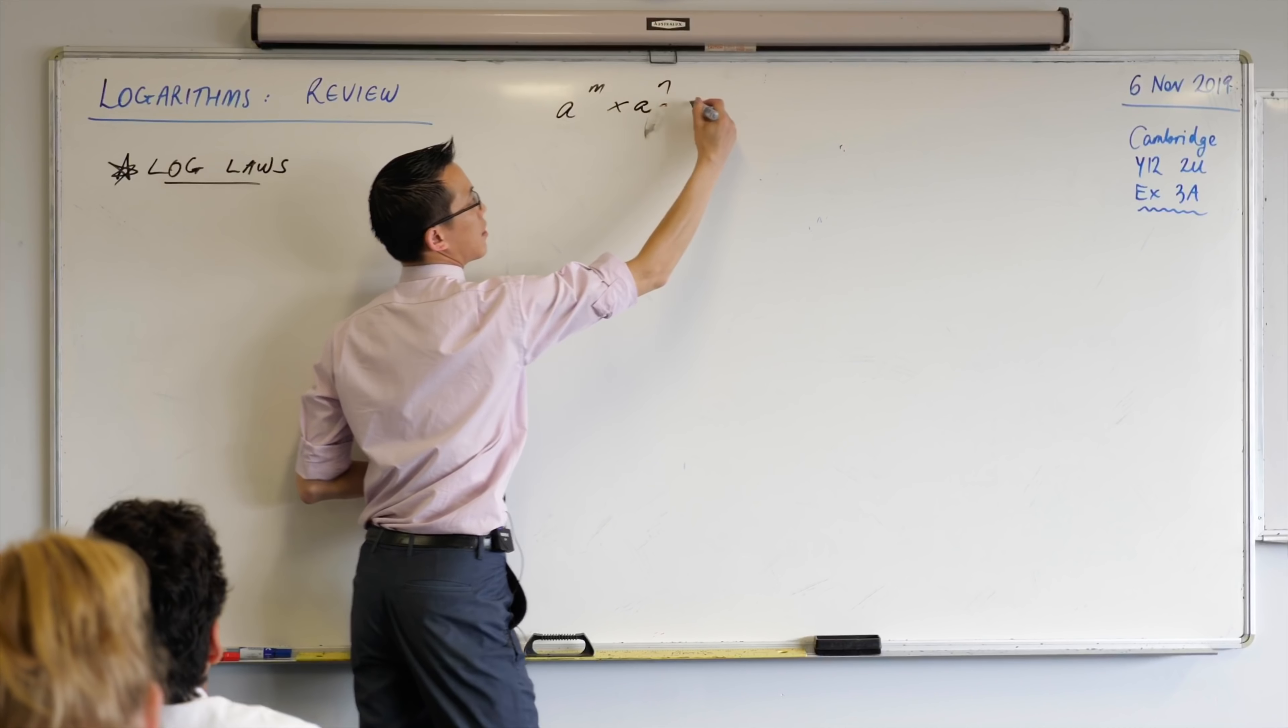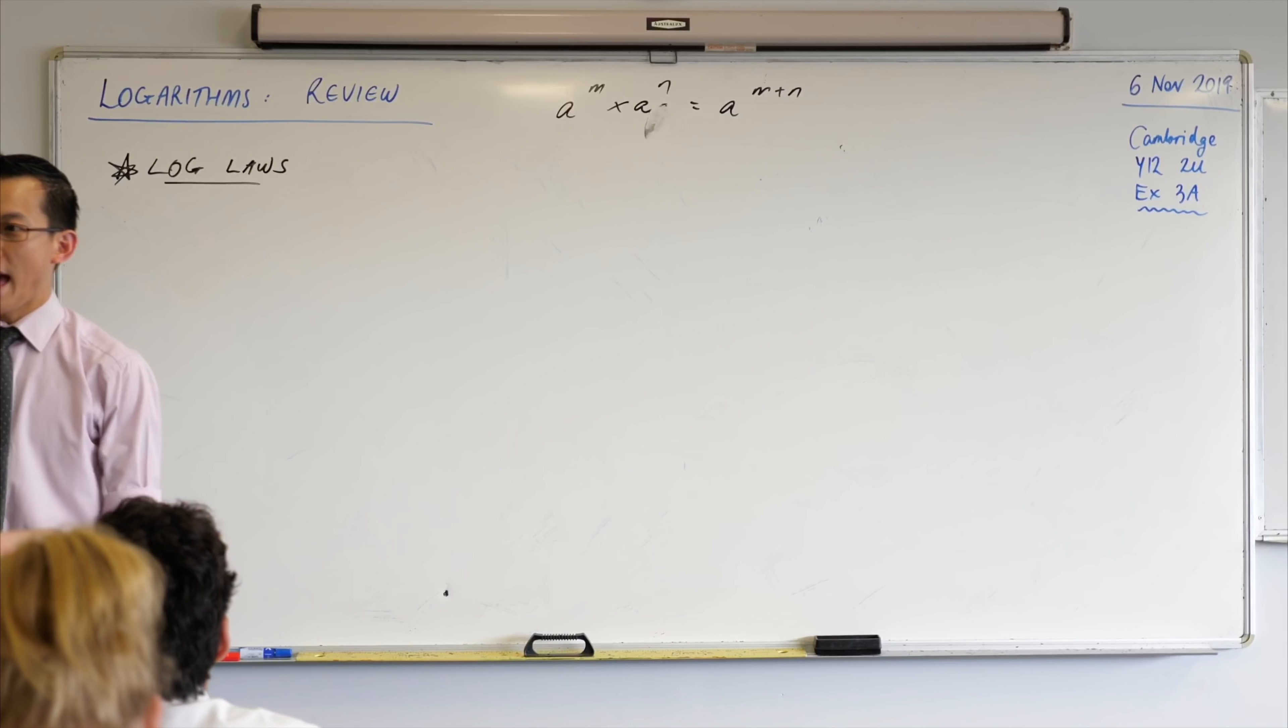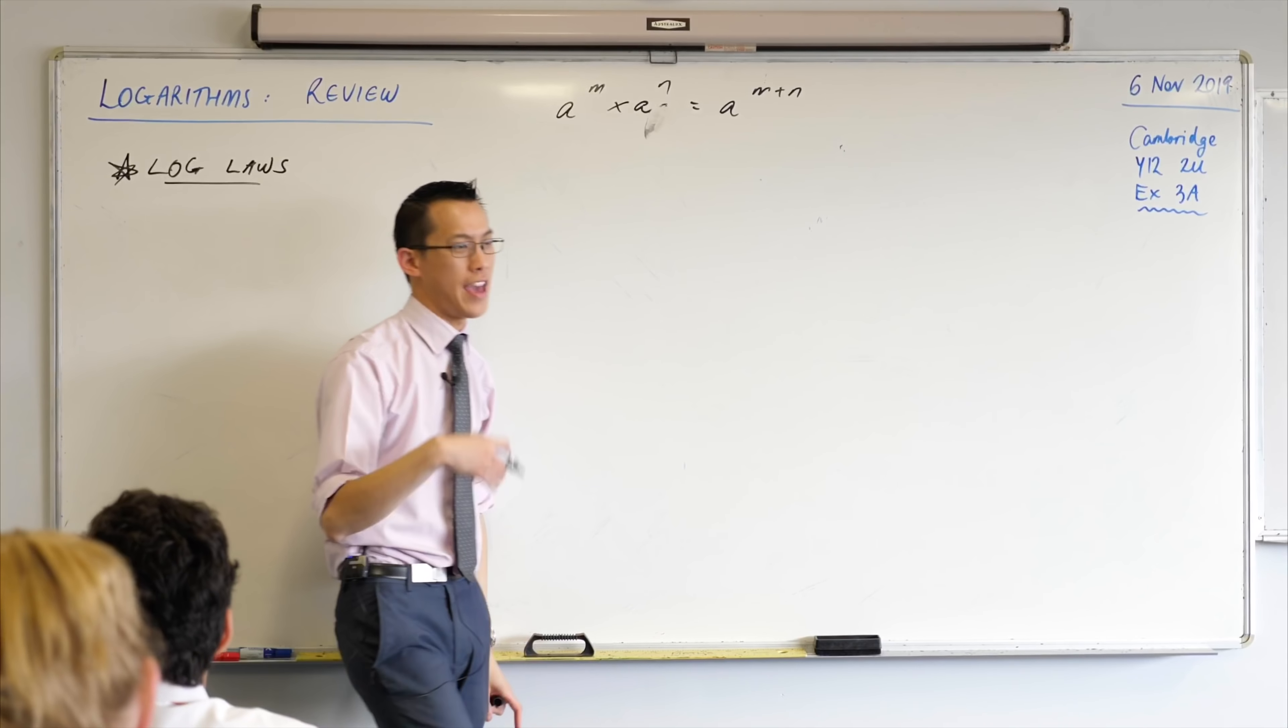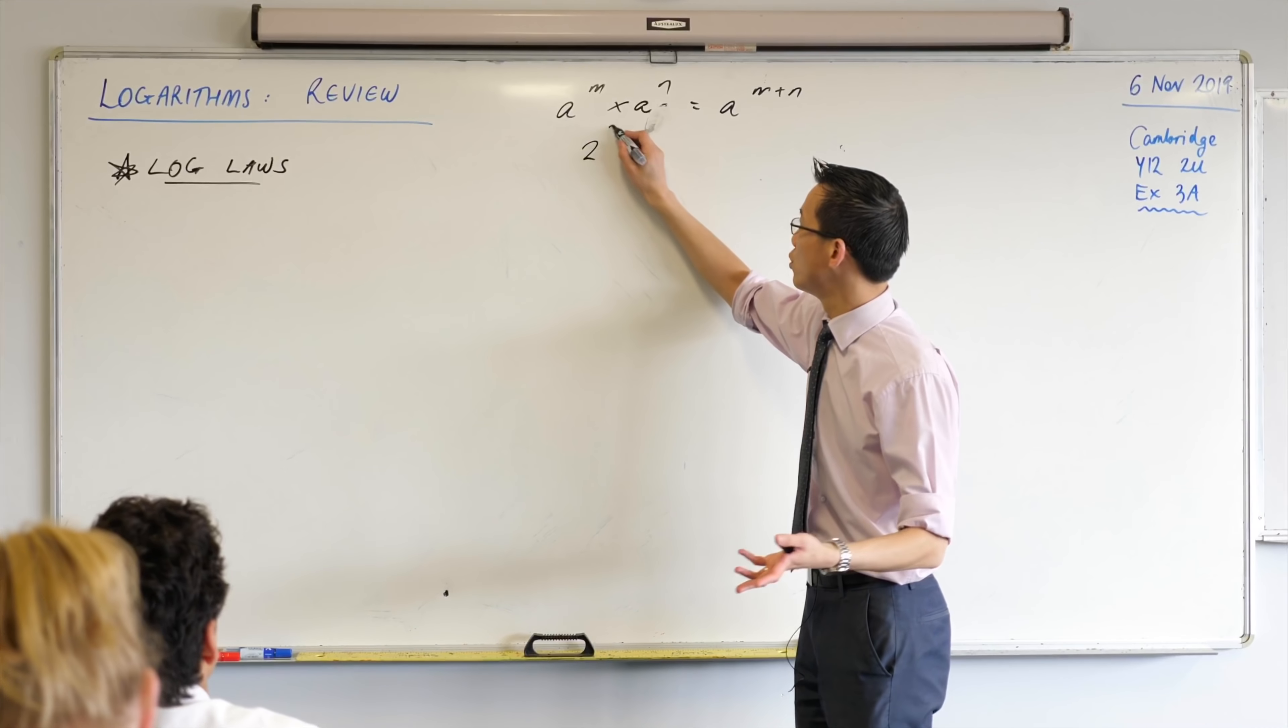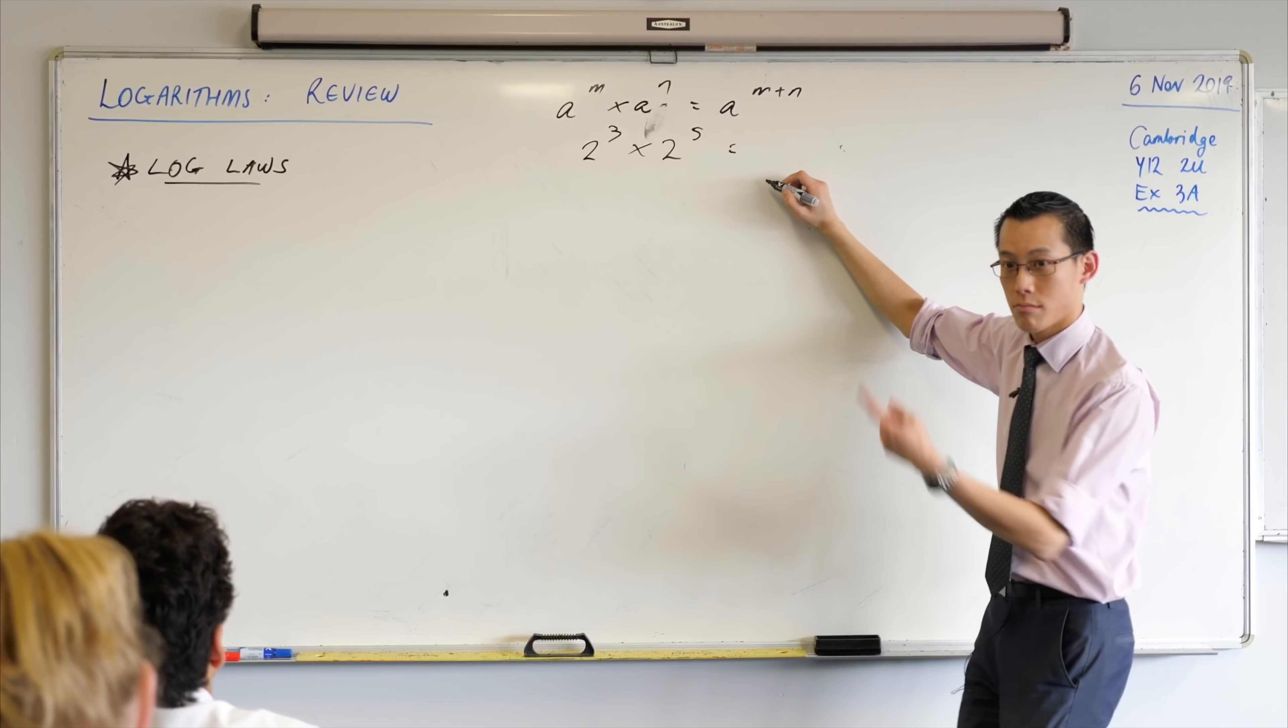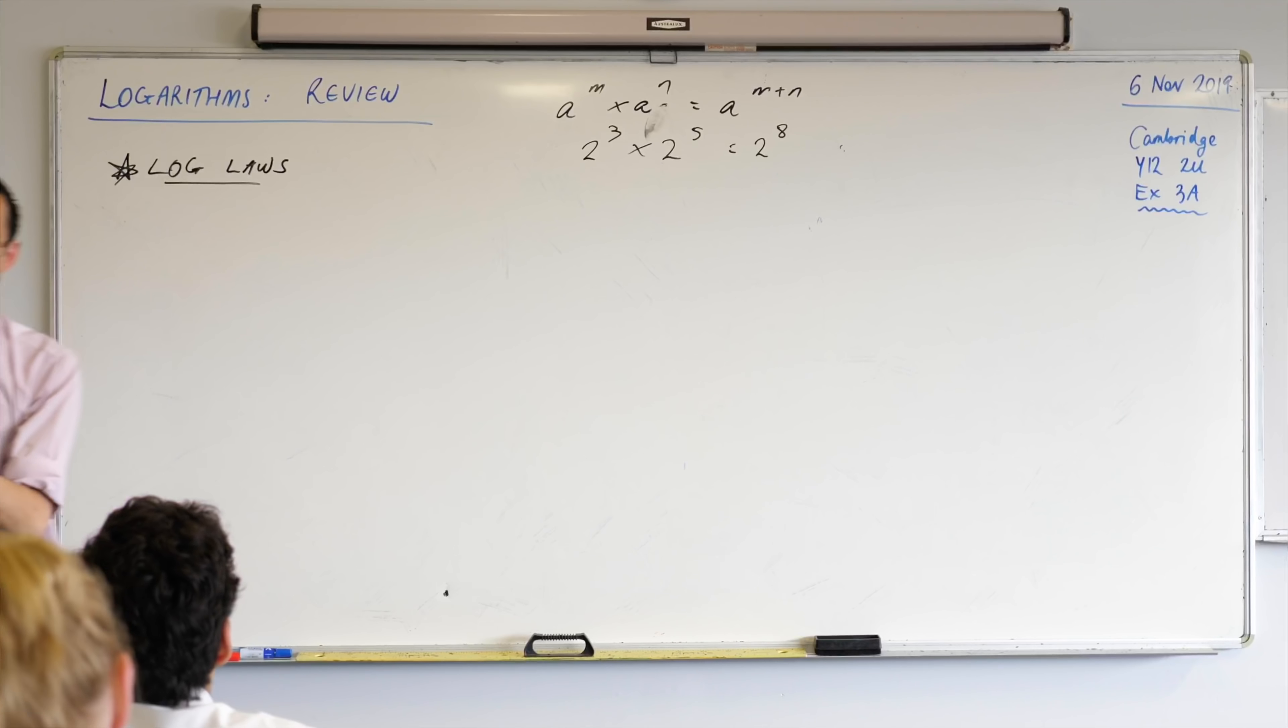An algebraic index law, this is an index law, and it's stated, I'll come to you first, it's stated generally. It's like for any a, for any m, for any n, you can say this. It's probably a bit easier to say just numerically, like for example 2 cubed times 2 to the power of 5 equals? 2 to the power of 8. To the power of 8, because you've added those indices. So I'm going to ask you to see how many log laws you can actually give to me, just from memory. Let's see how we go. Sarang, you told me you had one.